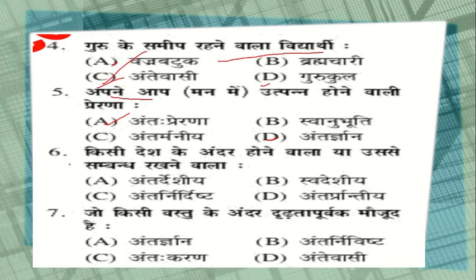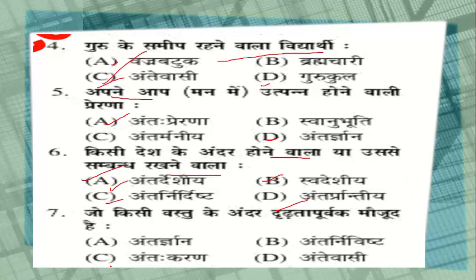Question number 6: options include निर्दिष्ट and option D अन्तर्प्रान्ती. The correct answer is अन्तर्देशी. Question number 7: जो किसी वस्तु के अंदर दृढ़तापूर्वक मौजूद है — option A: अन्तर्ज्ञान, option B: अन्तर्निविष्ट, option C: अन्तःकरण, option D: अन्तेवासी. The correct answer is option B, अन्तर्निविष्ट.